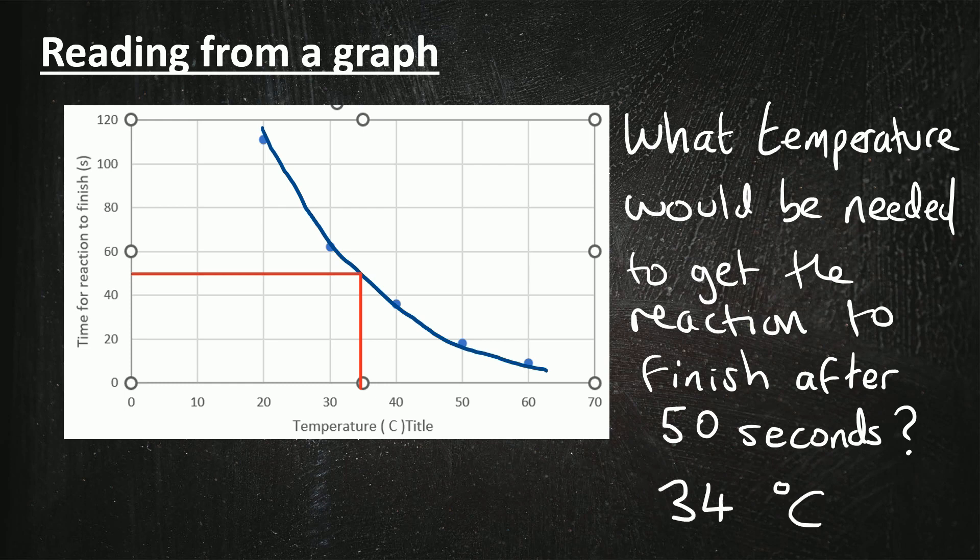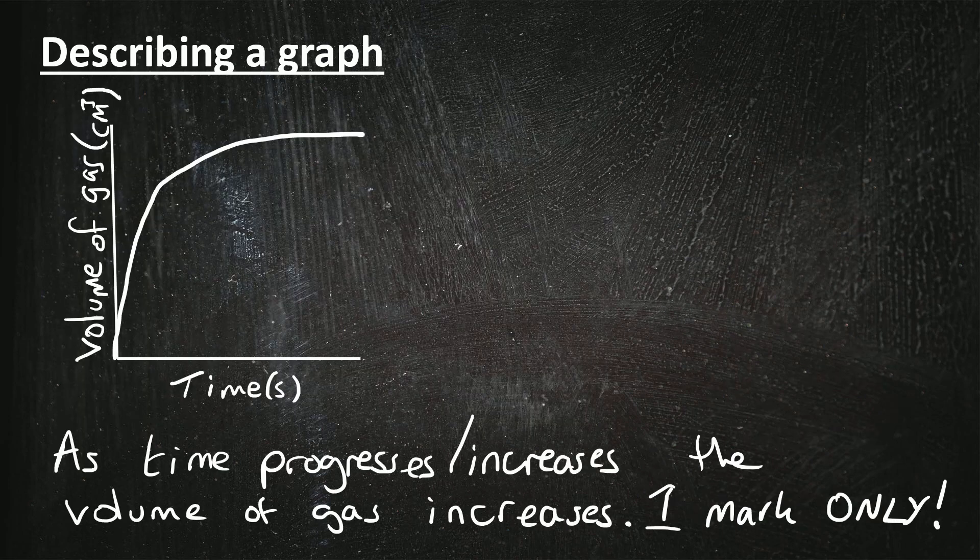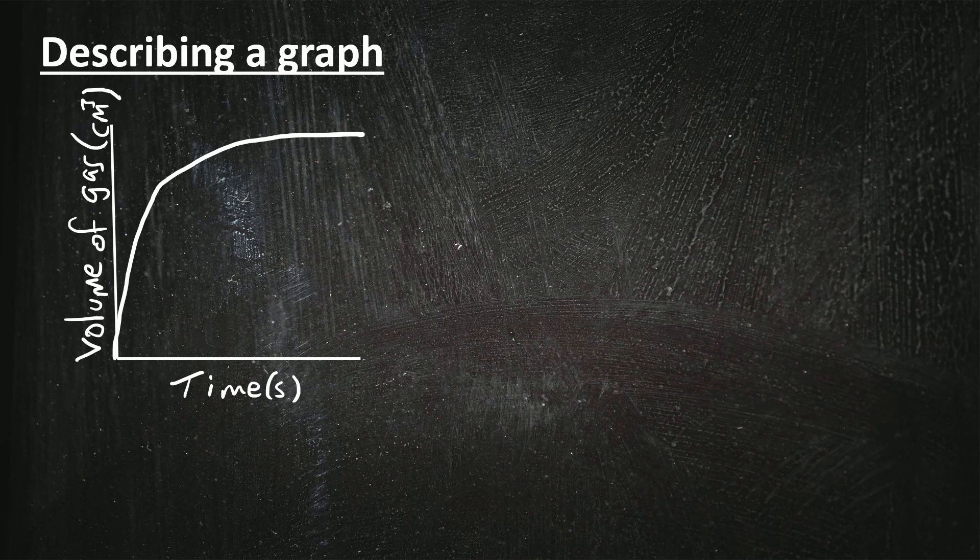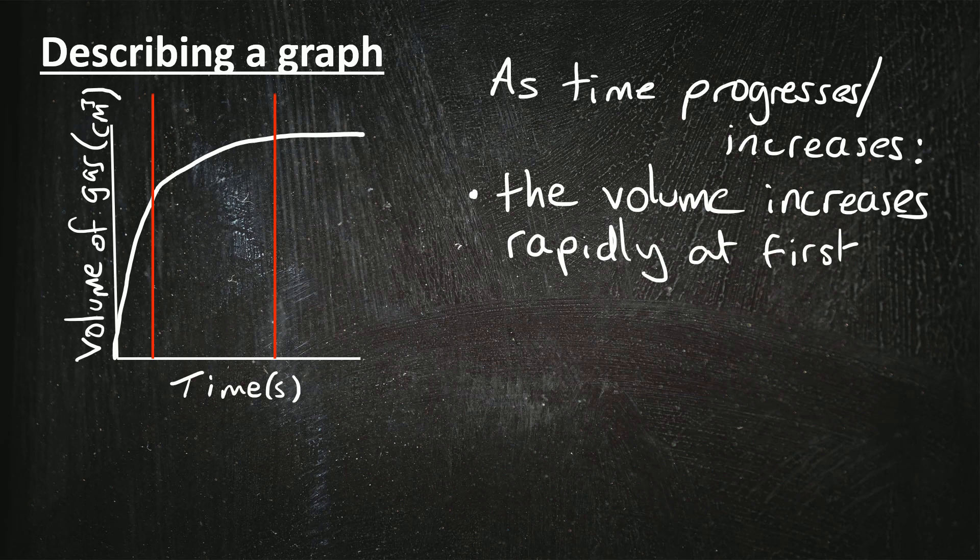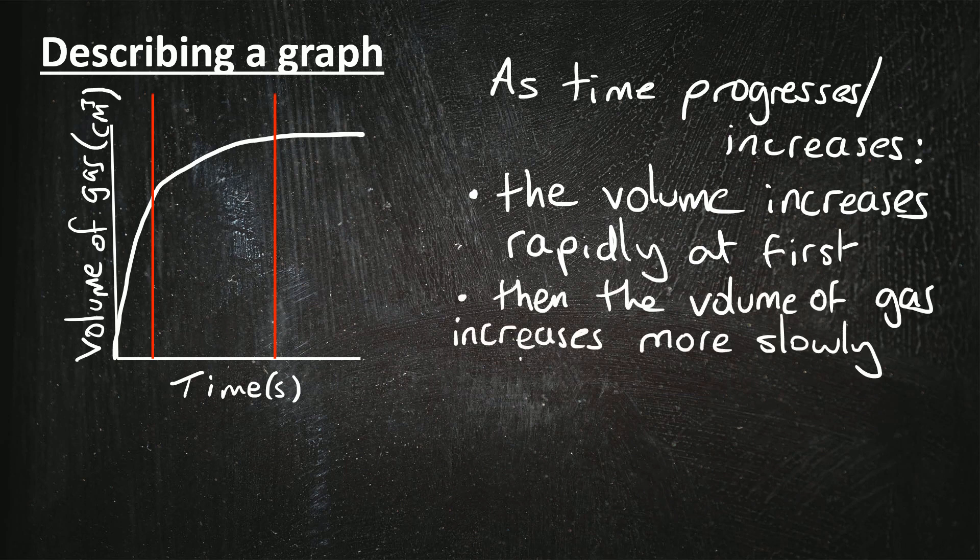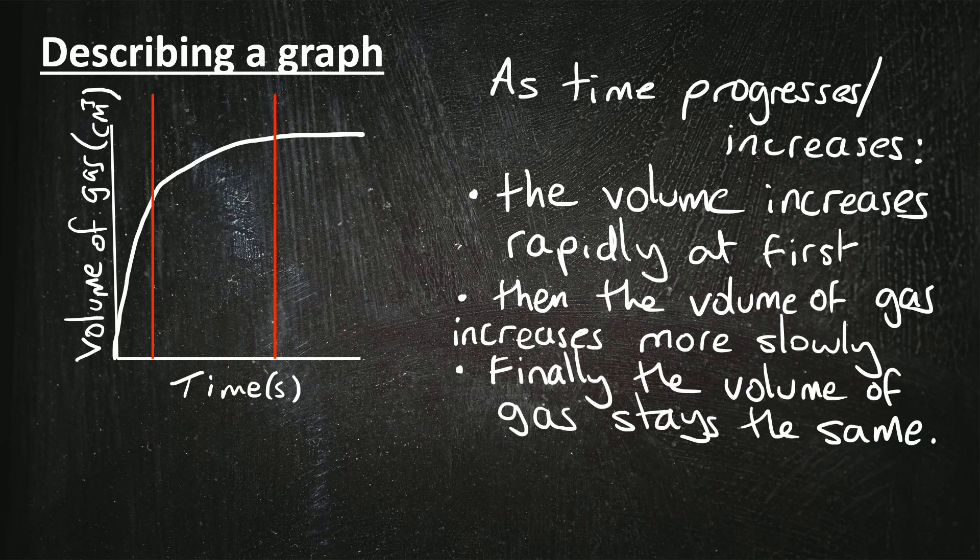A very common question on your exam is describing trends on graphs, and that can be for up to two or three marks. So here's a graph of time on the x-axis and the volume of gas made on the y-axis. So if I simply wrote 'as time progresses or increases, the volume of gas increases', that would only get me one mark. So to get the higher level of marks I need to recognize first of all that this is a three-part graph. The graph has three sections to it. So this time I would say as time progresses or increases, the volume increases rapidly at first - it's quite a steep section of the graph that first section. Then we can say the volume of gas increases but more slowly - but it's still increasing. And then the third section of the graph we can say finally the volume of gas stays the same.